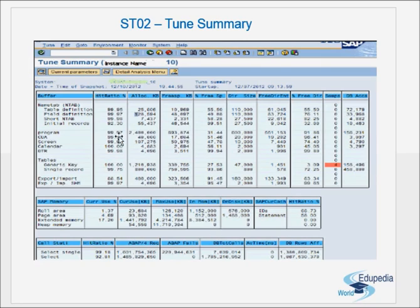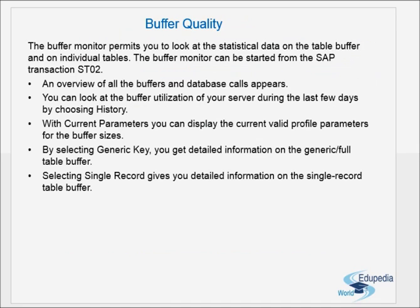In ST02 you have the hit ratio, the allocated space, the free space, the free space percentage, and other things. You also have different types of memories. From ST02 you can check what are the different types of buffers, the free space, the total space, the hit ratios, and the quality. You can also see an overview of all buffers and database calls.